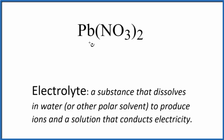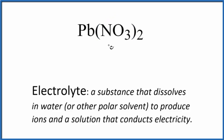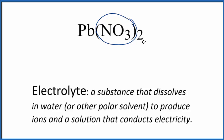Lead is a metal, and NO₃ is the nitrate ion — it's a group of non-metals. So we have a metal and a polyatomic ion, a group of non-metals. This is an ionic compound. So if you know your solubility rules, nitrates — compounds with nitrates — are very soluble.